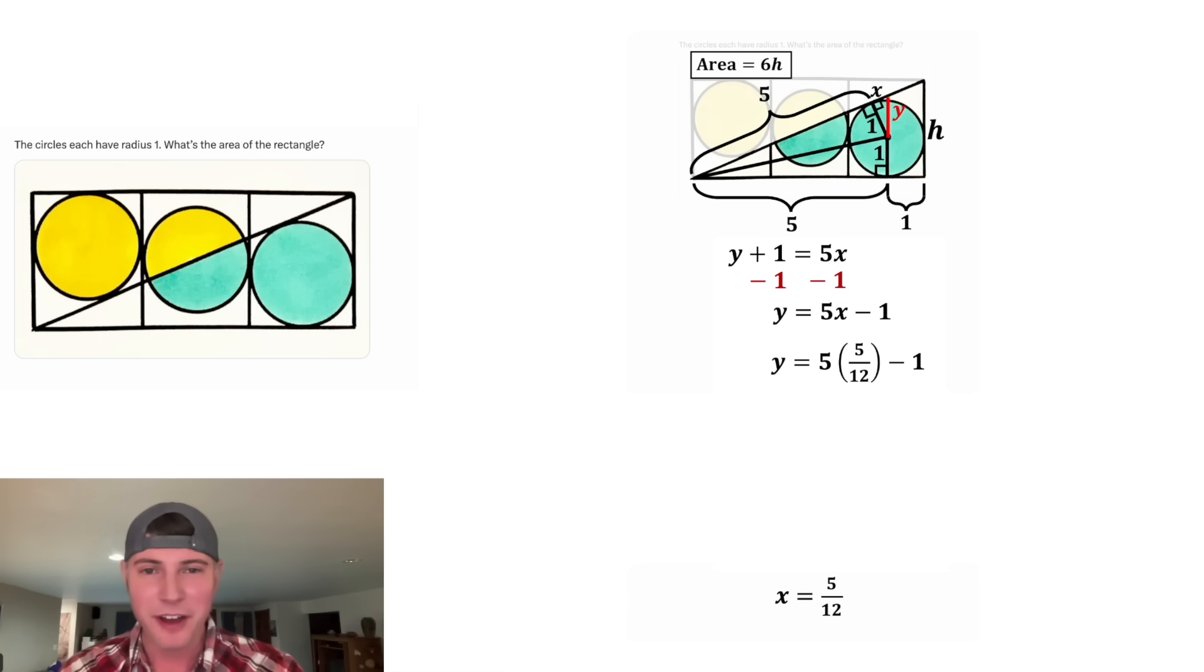So let's plug 5 12ths in for this x. And then 5 times 5 is 25, and that'll still be over 12. That gives us y is equal to 25 twelfths minus 1. In order to combine these two, we need to give them a common denominator. Let's rewrite the 1 as 12 twelfths. And then 25 twelfths minus 12 twelfths is 13 twelfths. That is very difficult to say. And now we have the answer to y. It's 13 twelfths.